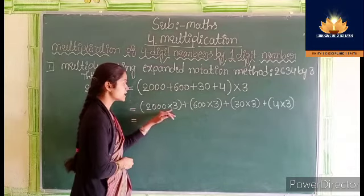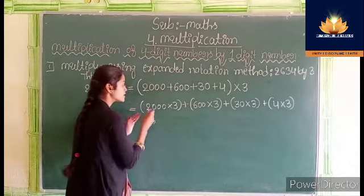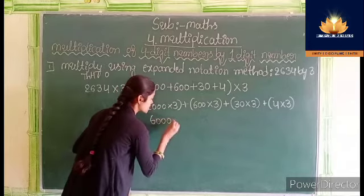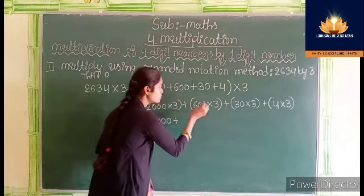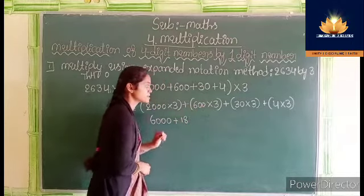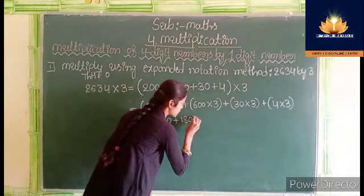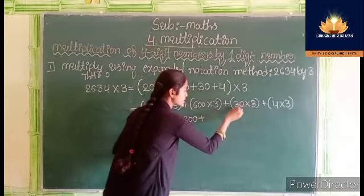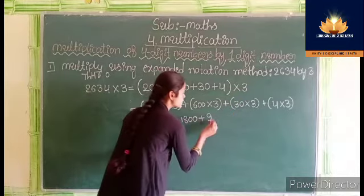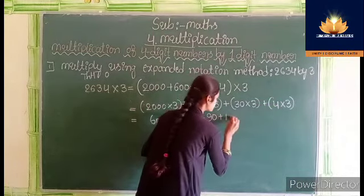That is: 2000 into 3, plus 600 into 3, plus 30 into 3, plus 4 into 3. 2000 into 3: 3 twos are 6, so we get 6000. 600 into 3: 3 sixes are 18, so we get 1800. 30 into 3: 3 threes are 9, so we get 90. 4 into 3: 3 fours are 12.